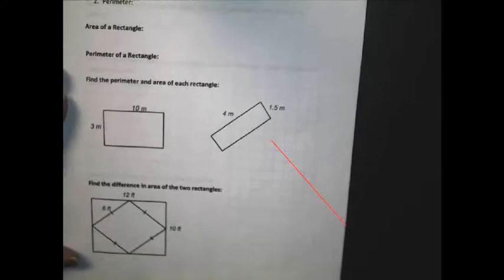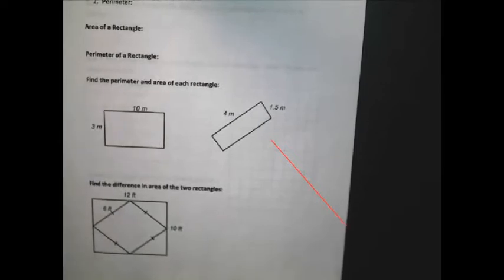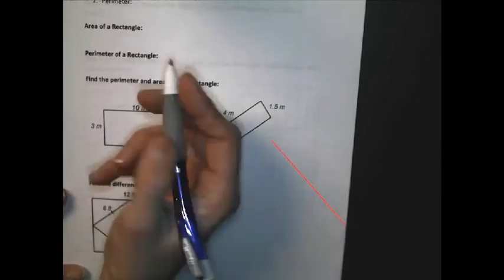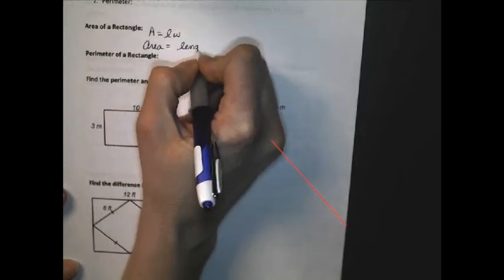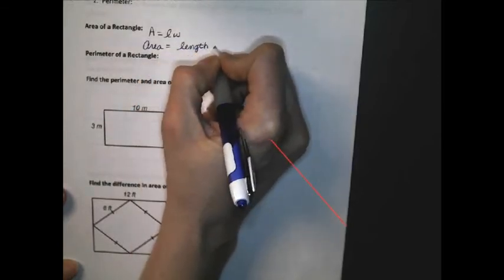The area is simply the number of square units contained in the interior of a figure. The rectangle area formula is area equals length times width. So that stands for A equals the length times the width.